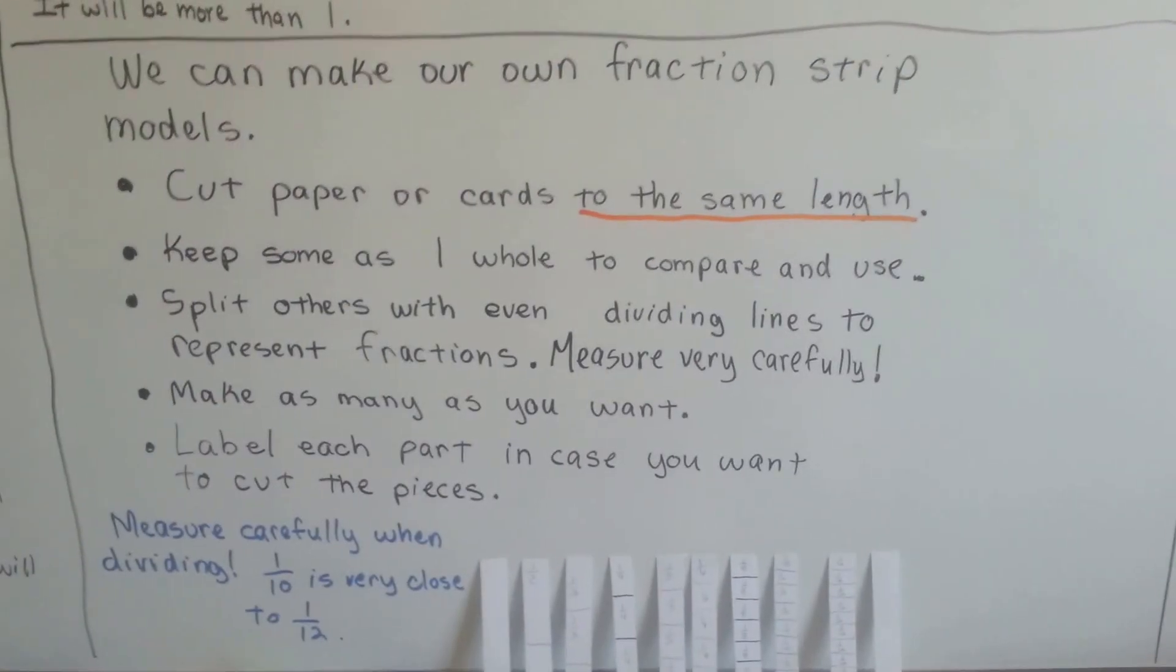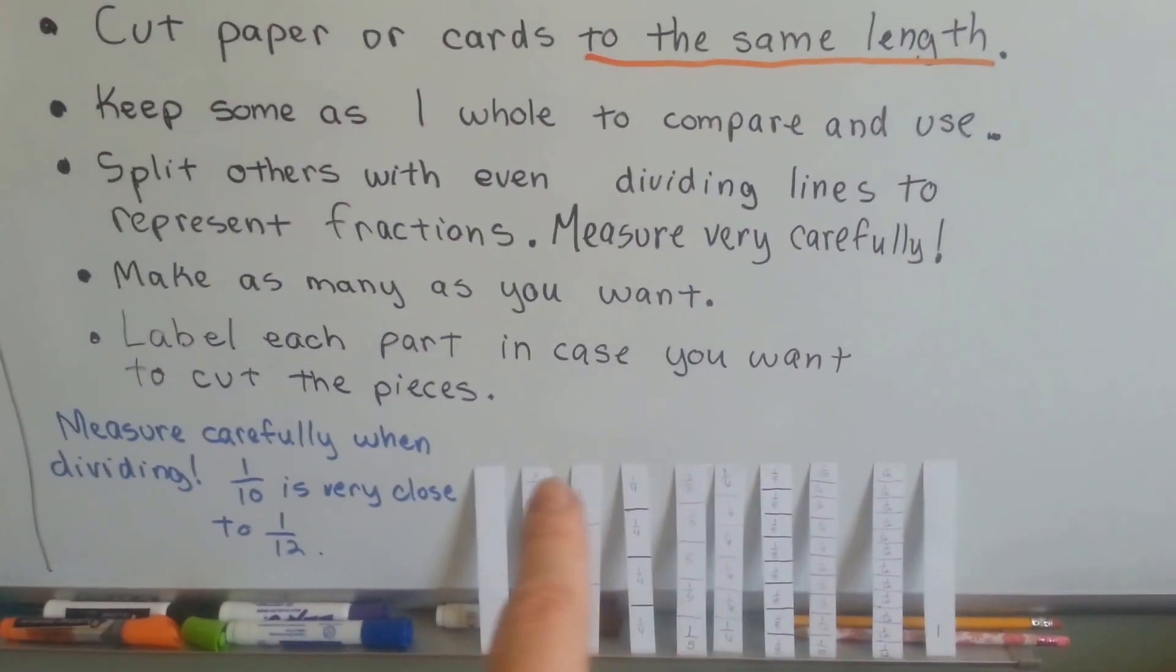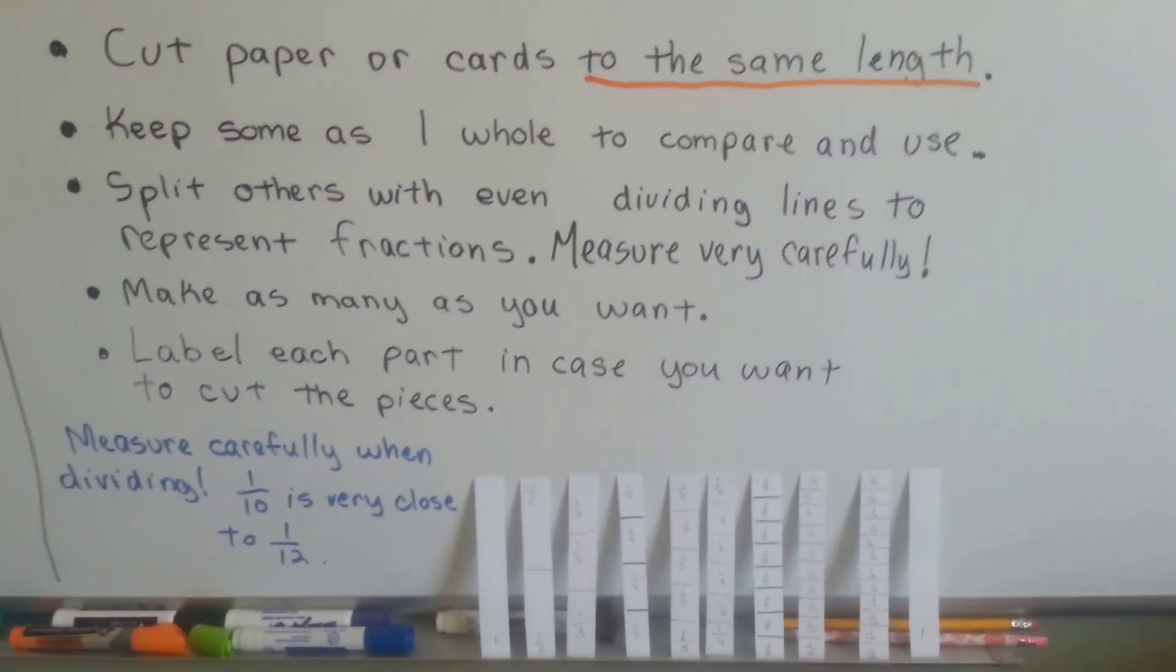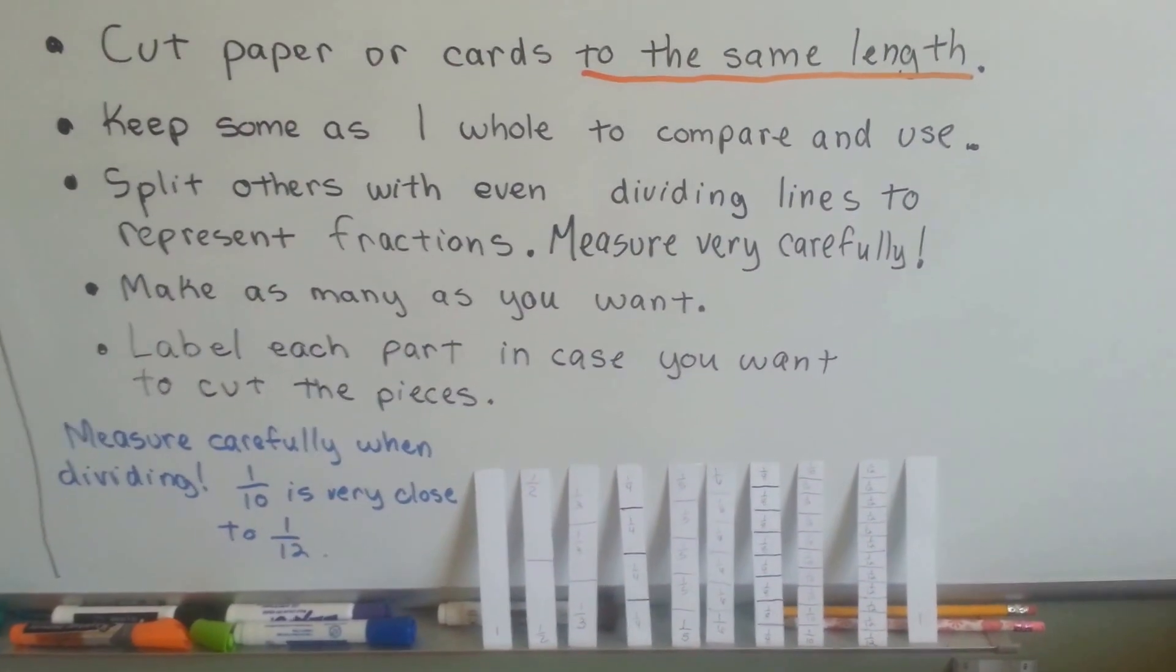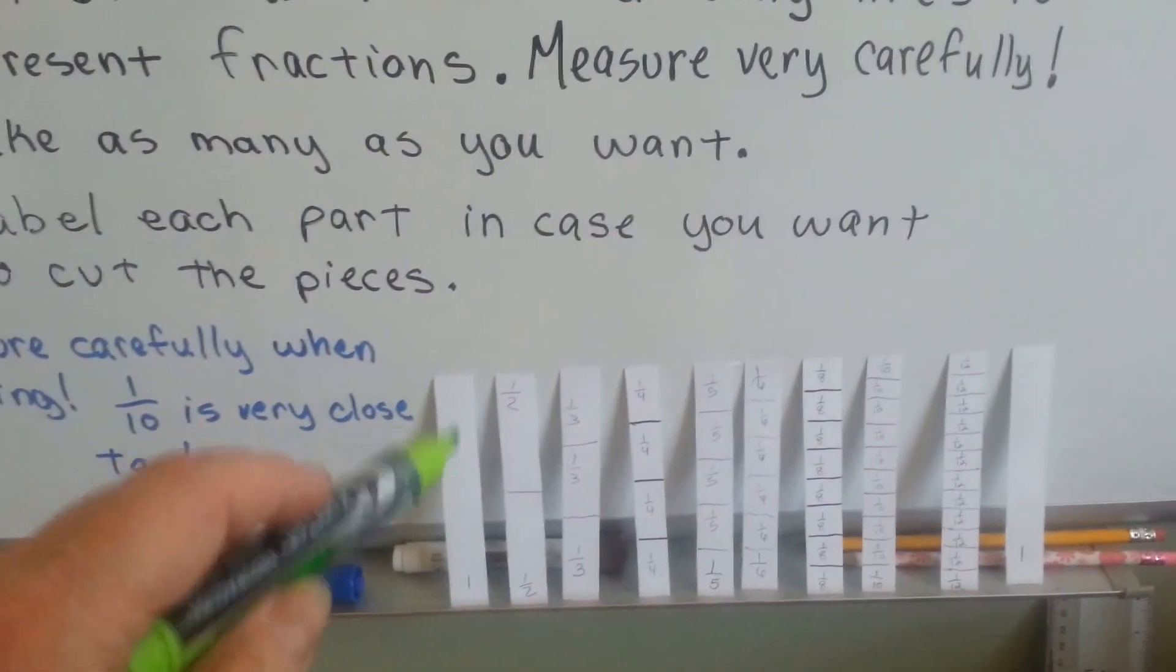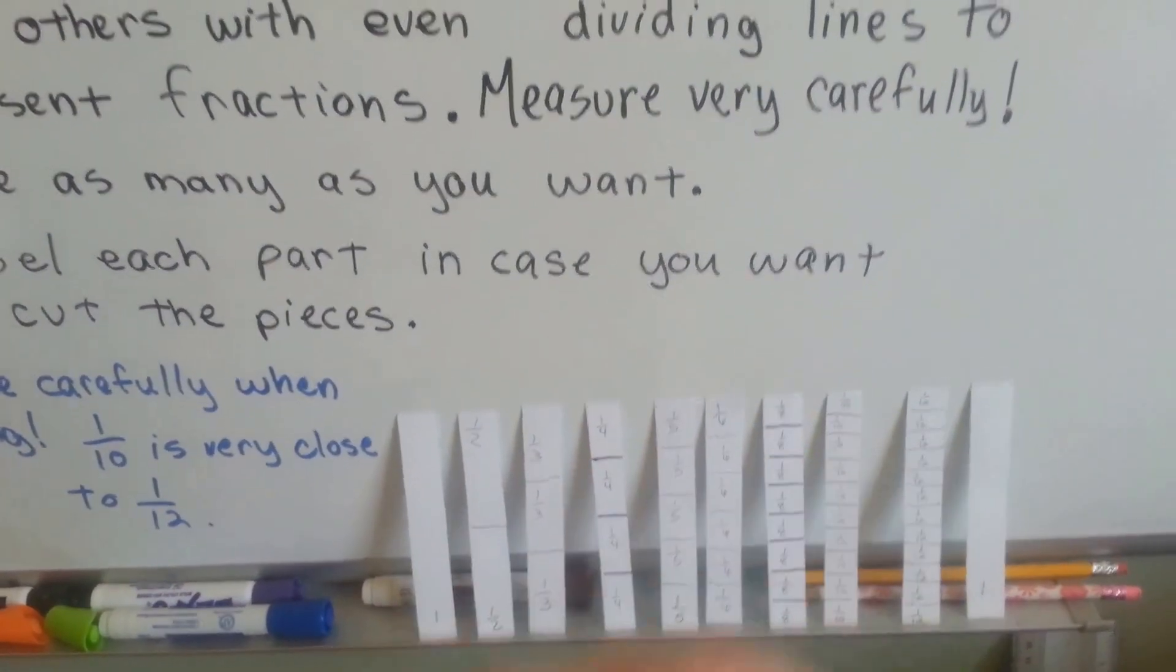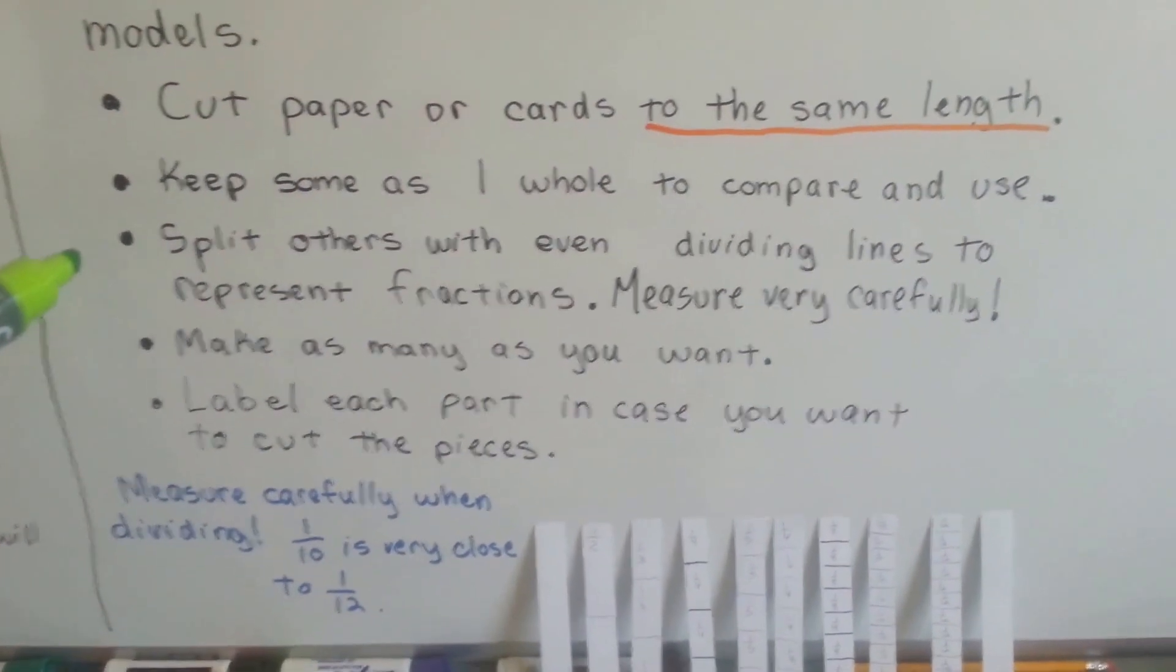We can make our own fraction strip models. What you do is, you cut strips of paper or card so they're the exact same length. They all have to be the same length. You keep some as one whole, like this one or this one.